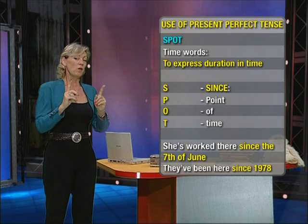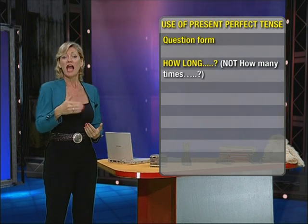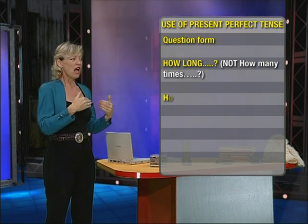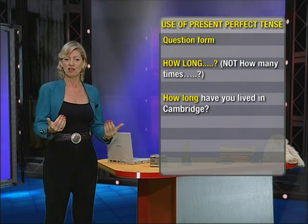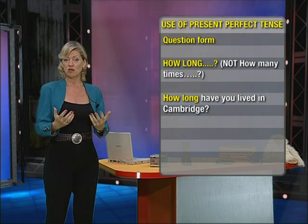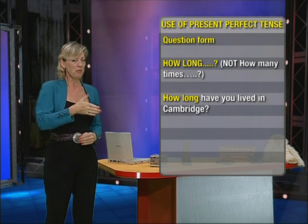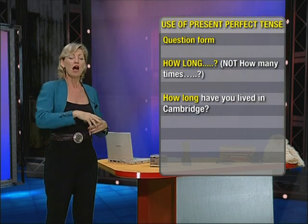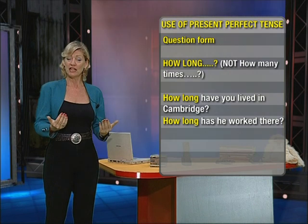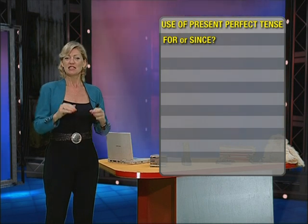The interesting thing is that when we ask questions about duration, we use the words 'how long.' For example: how long have you been here? Or: how long have you lived in Cambridge? And the answer would be: I've lived in Cambridge for ten years or since 2001. Remember that 'how long' is different from 'how many times.' How many times is one, two, three, four, five — how long is a period of time. Another example: how long has he worked there? He's worked there for ten years, or since 1973.